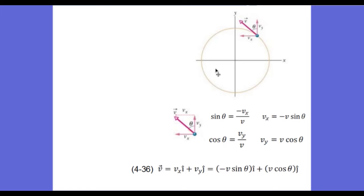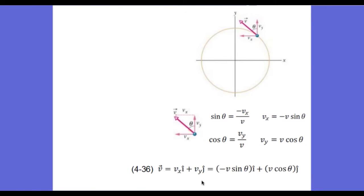Using our second diagram, the velocity vector has x and y components, so we write our velocity vector in unit vector notation: the x-component in the i direction and the y-component in the j direction. Using this right triangle with sine and cosine of theta, Vx equals negative V sine theta (pointing left) and Vy equals V cosine theta (pointing up). We replace Vx and Vy with these expressions to get our velocity vector in unit vector notation.